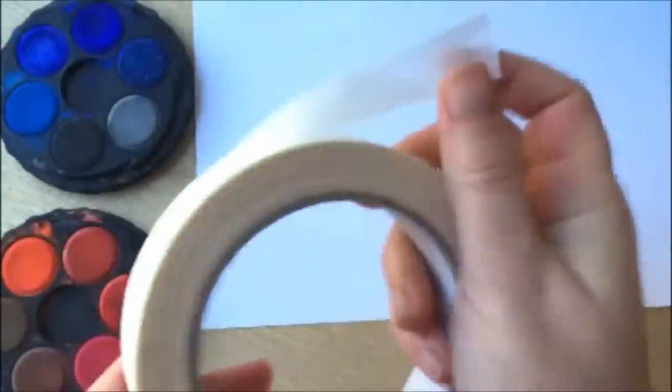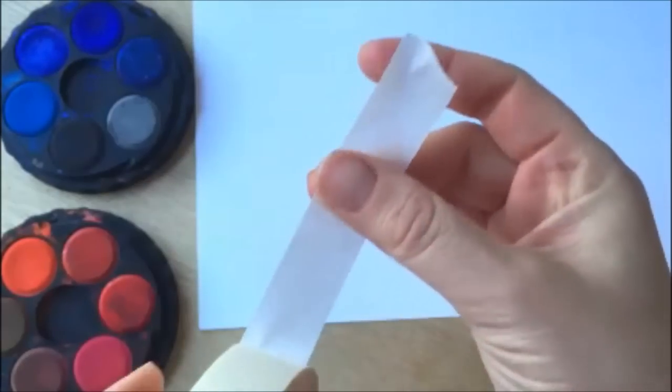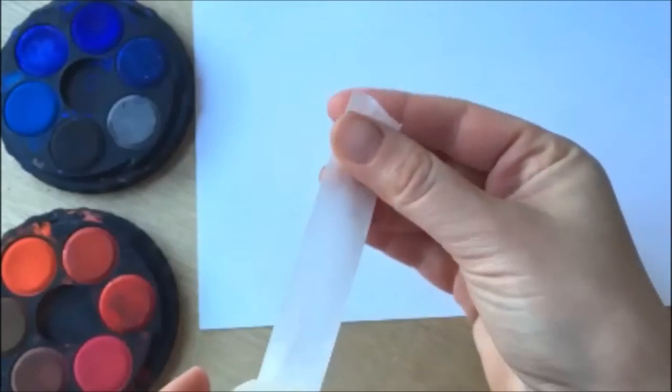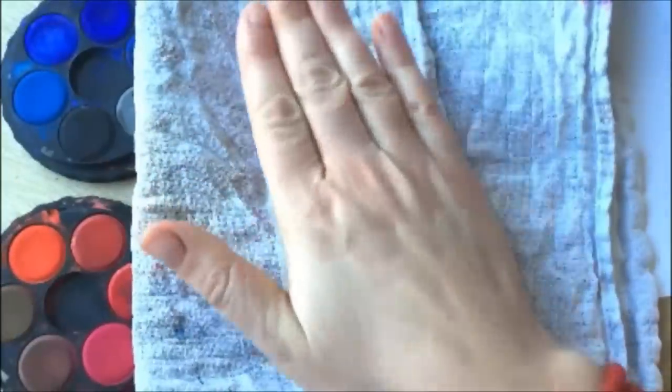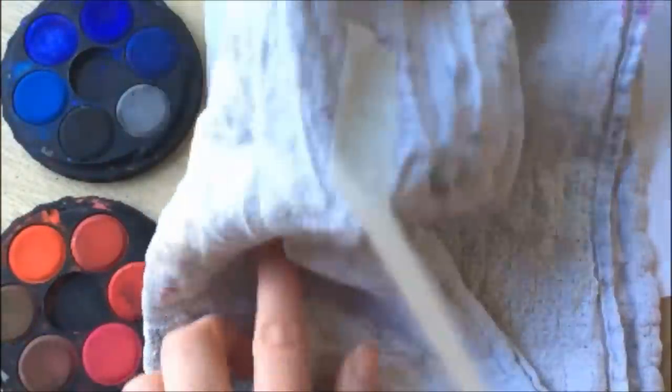What you need is some watercolors, some paper and some masking tape. Now my masking tape is really sticky and it means it sometimes tears my paper, so I'm just going to use an art rag here just to kind of take a bit of the stick off it before I stick it on my paper because I really don't want my paper to break, and then I'm going to stick it on my sheet of paper.